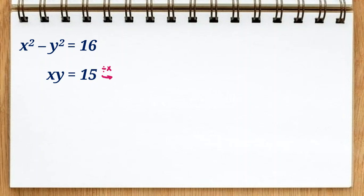So if we divide by x, the left answer is y, right answer is 15 over x. And if we replace it here, it will be x squared minus 15 over x all squared equal to 16.